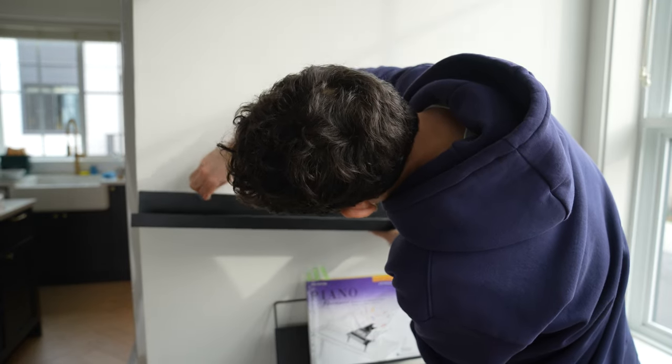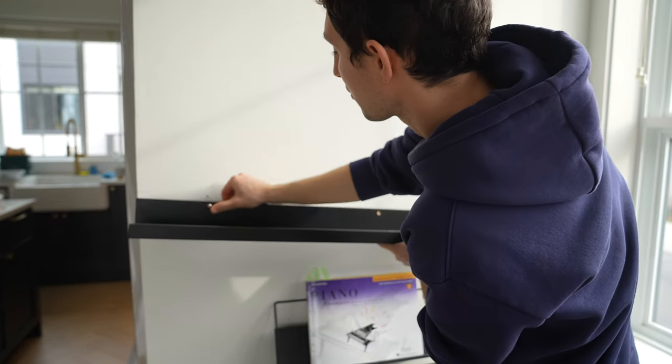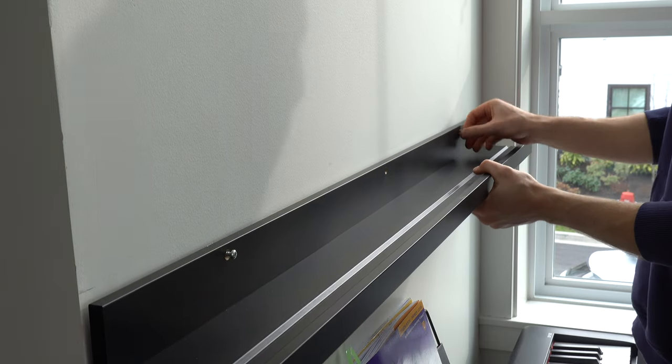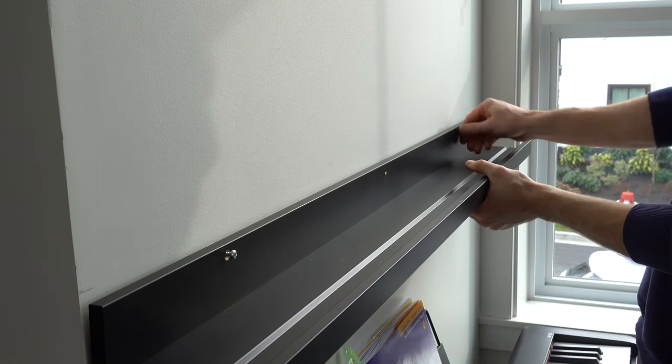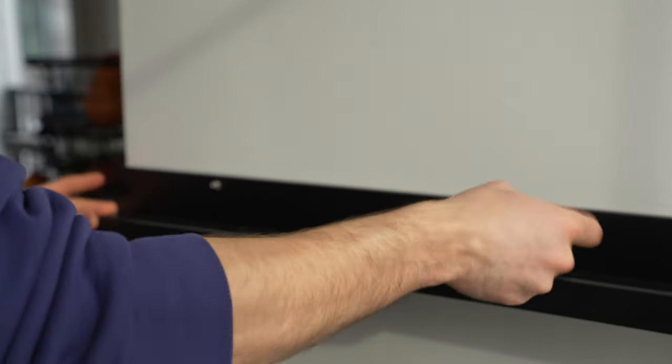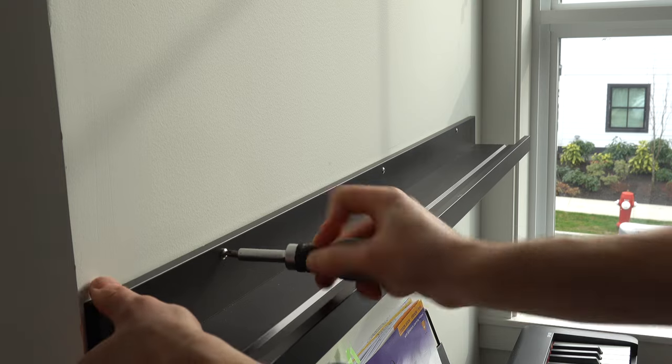After anchors are installed, align the hole on the side of the shelf with an anchor. Start screwing in the screws. Tighten them all up.